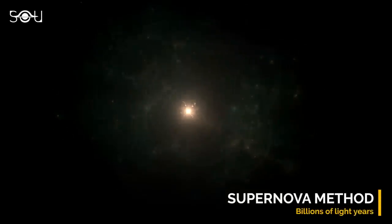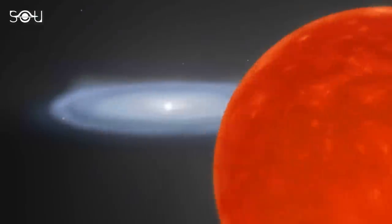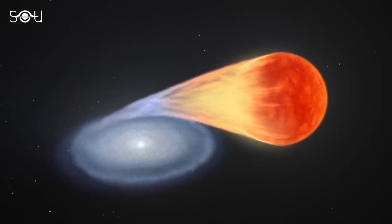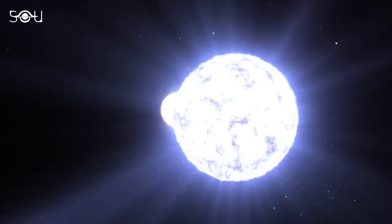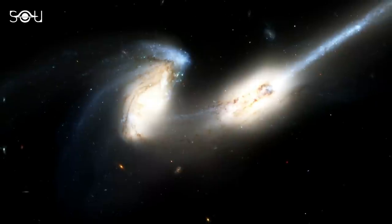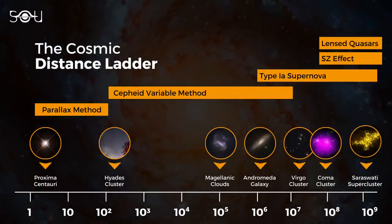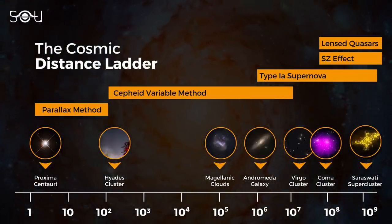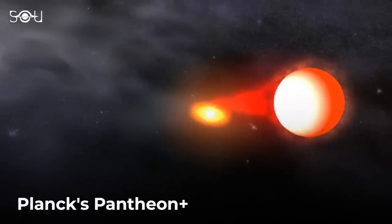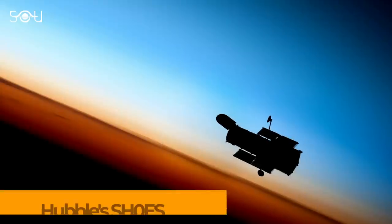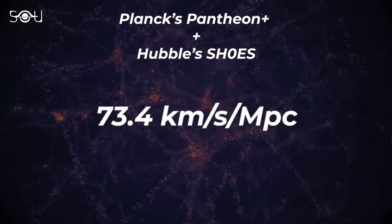The supernova method enables astronomers to determine the distances of deep space galaxies that lie billions of light-years away. Type Ia supernovae occur when a white dwarf feeds on its companion star and absorbs too much material, disrupting its hydrostatic equilibrium. This results in a sudden, extremely bright explosion of the white dwarf into a supernova, making it an ideal standard candle to calculate distances of billions of parsecs. However, the issue with this stepwise measurement — called the cosmic distance ladder — is the uncertainty that compounds with each step. Planck's Pantheon Plus analysis analyzed roughly 1,550 Type Ia supernovae, and when combined with the Hubble SH0ES program's study of Cepheid variables, the Hubble constant was determined to be 73.4 km per second per megaparsec.